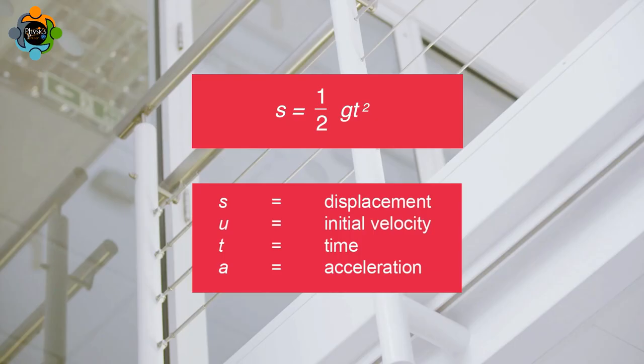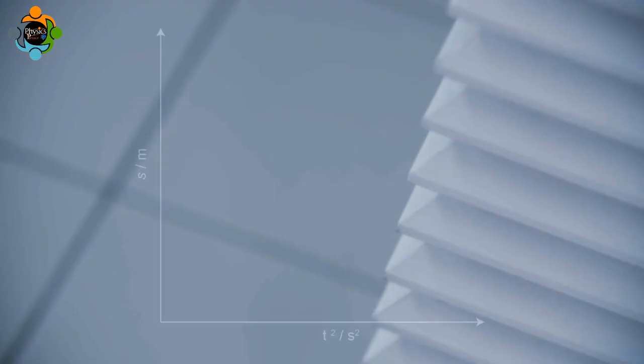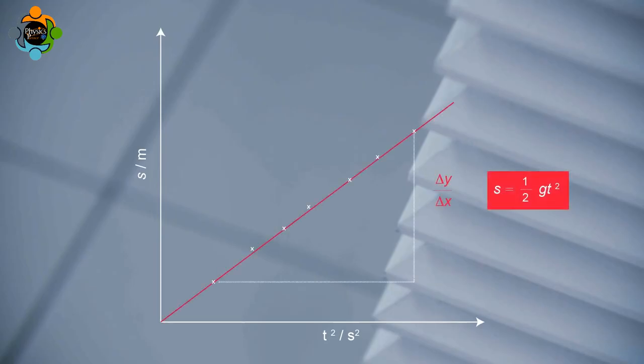A graph is plotted of s against t². A line of best fit is drawn. The gradient of the line of best fit represents 1/2 g.